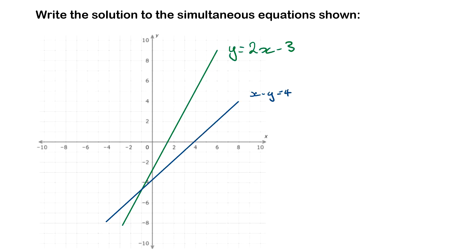They intersect down here which is approximately x equals 1 and y equals negative 5. So you would say that the solution is 1, negative 5. Remember your x's come first when you're writing down your coordinate and then your y's.